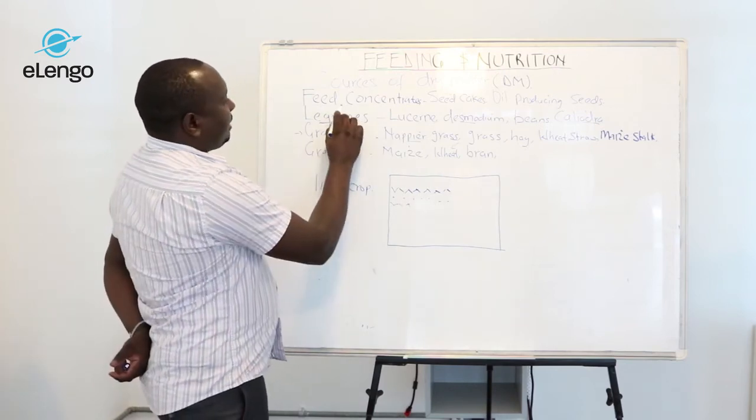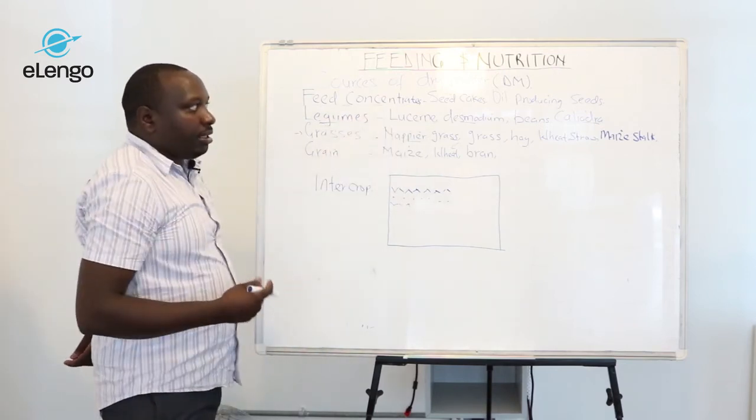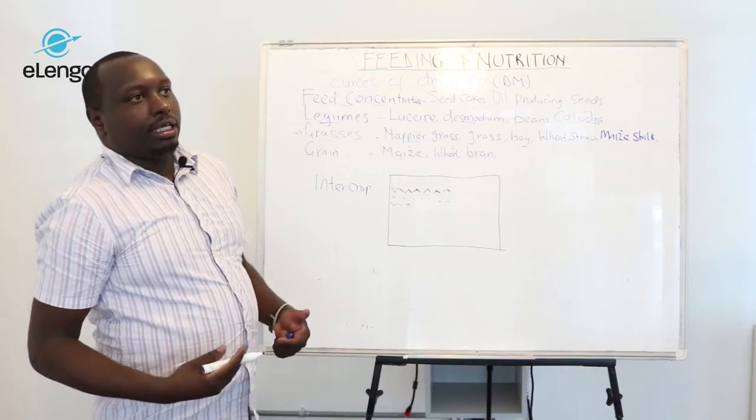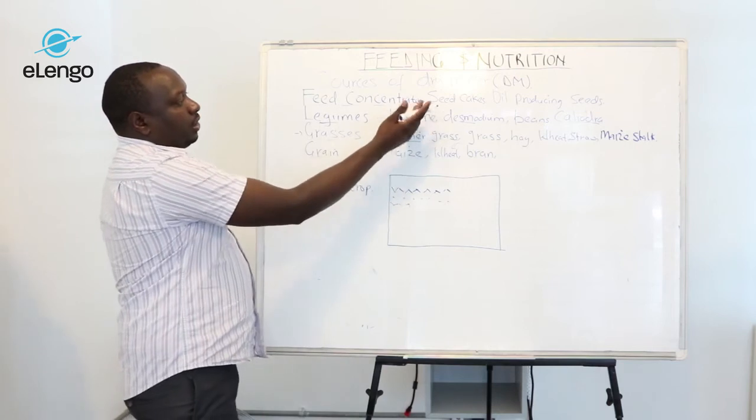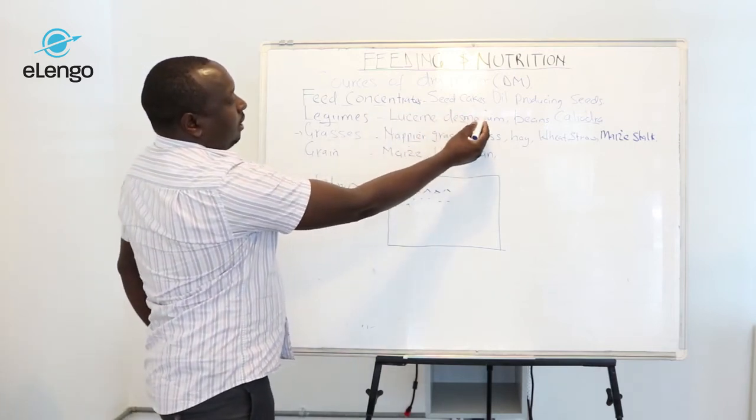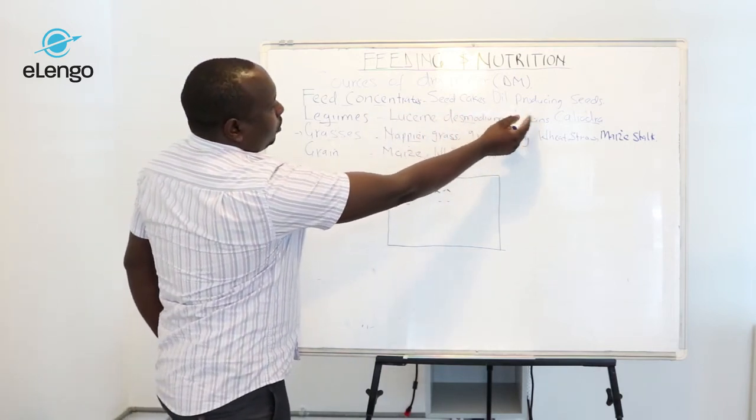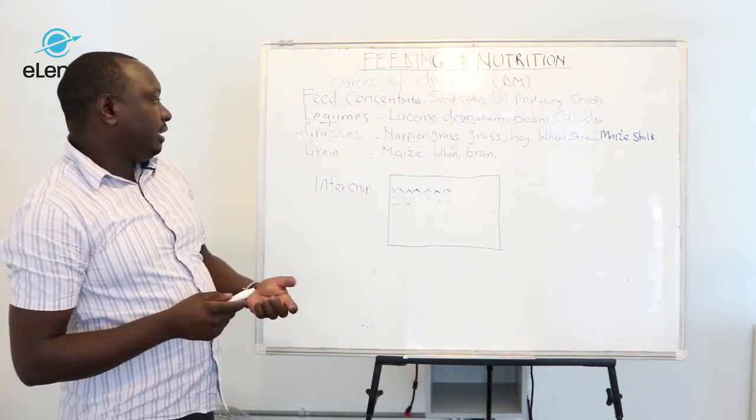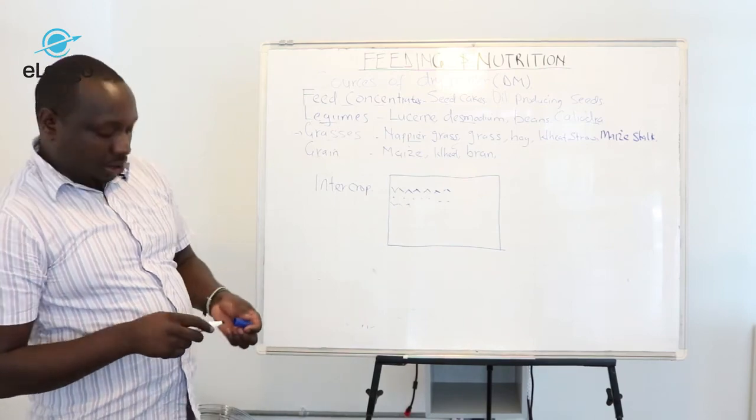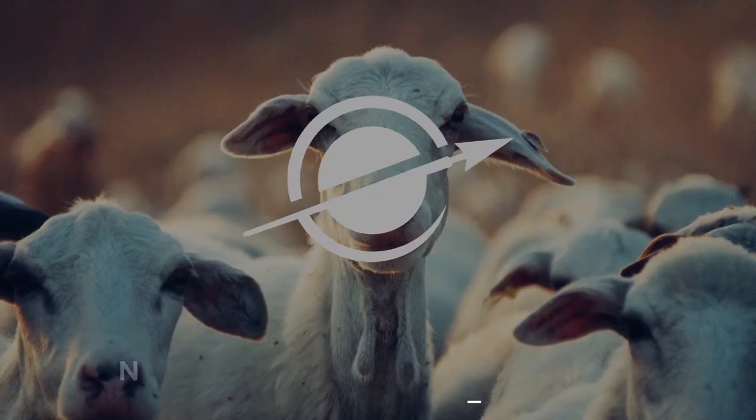Then the farmer can also introduce feed concentrates, which basically occur in flour form and are manufactured. You can have a portion of feed concentrates just to have a well-balanced diet for the goat.